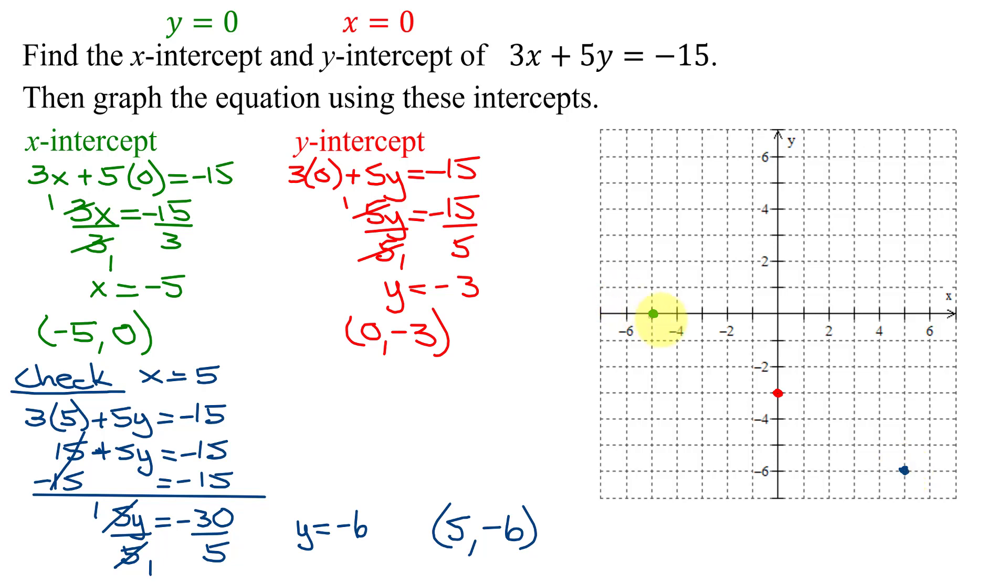Now, do these points look like they lie on a straight line? Yes. So let me try and sketch it in quickly. Hopefully I go through my points. That looks like about as good as it's going to get. And don't forget, you need to put arrows on both ends of your line. So now I have found the x-intercept, the y-intercept, and graphed the equation using the intercepts and a third checkpoint.